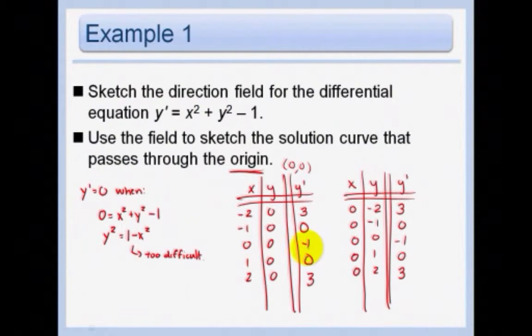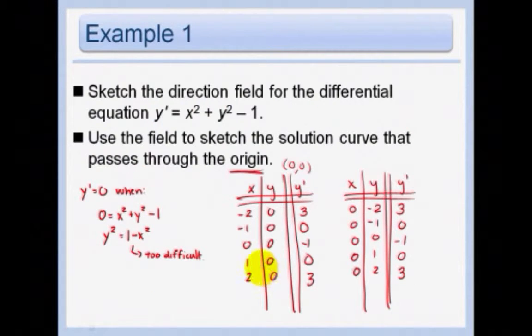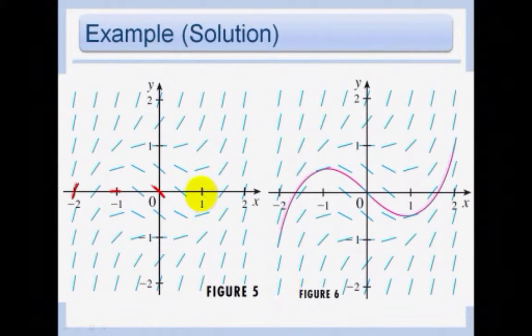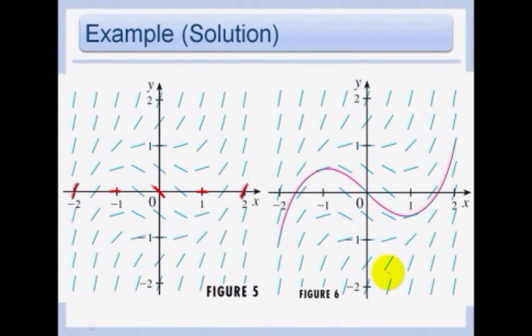At 0, 0, our slope was negative 1. So that's a 45 degree line with a negative slope. At 1, 0, our slope was 0. And then at 2, 0, our slope was 3. So slope is 0, and then slope is 3. Slope was 3. Our slope was 3. And then we did the y's. We did the same 3, 0, negative 1, 0, 3. So we had 3, 0, negative 1, 0, 3.